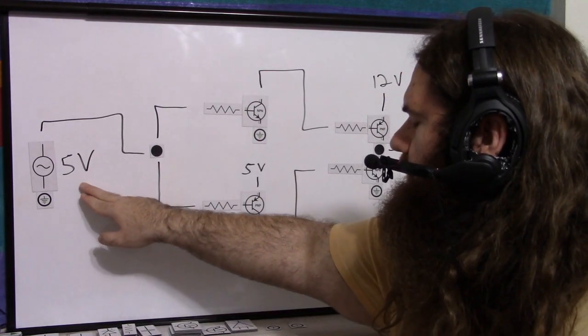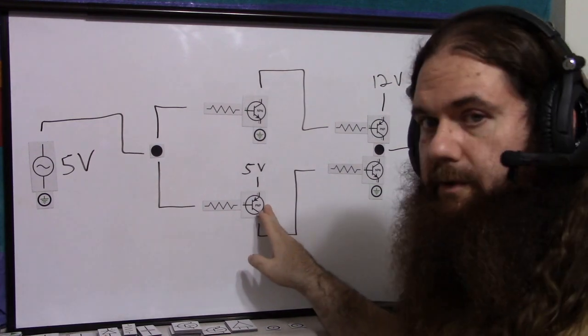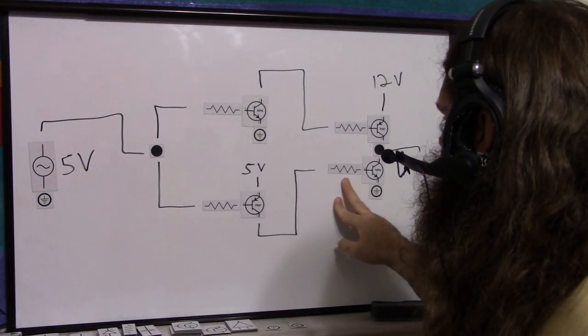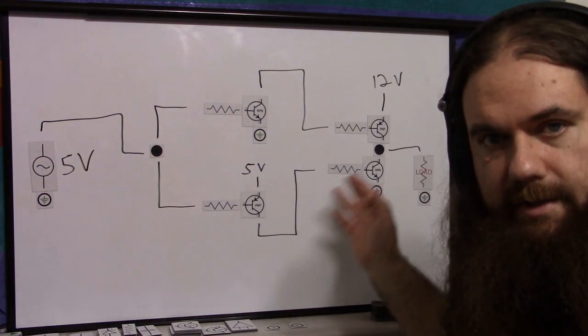Then over here, we have the 5 volts on the square wave and a 5 volt PNP, which turns the PNP off, which does not let current through at all to the base of the NPN, and that stays off.